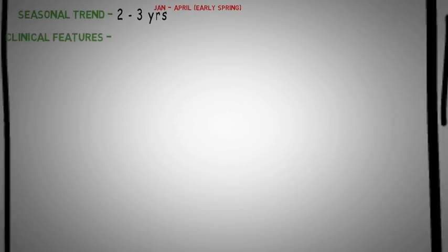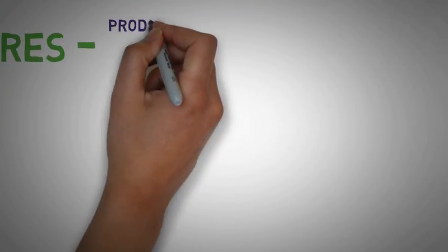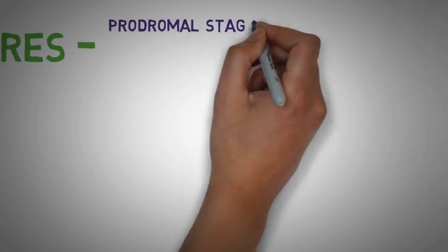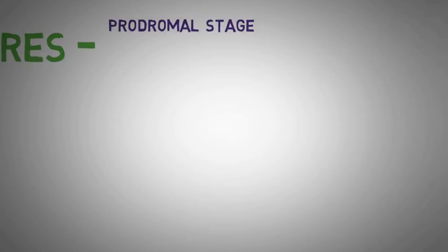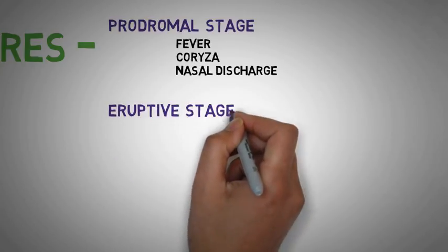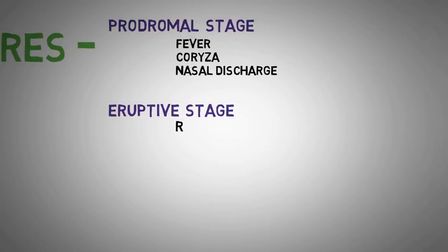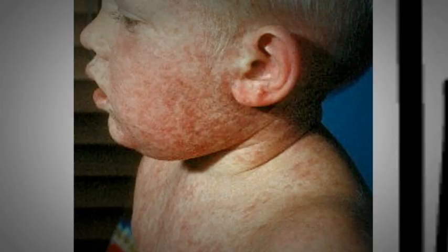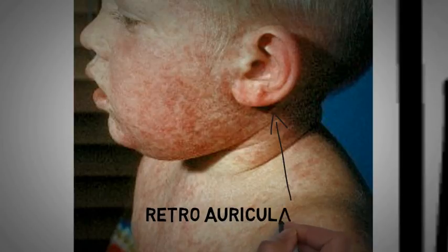The clinical features of measles are divided into 3 stages. The first stage, which is the prodromal stage, causes fever, coryza, and nasal discharge. In the eruptive stage, a dusky red colored maculopapular rash occurs. The rash begins from behind the ear, i.e., it has a retro-auricular origin.